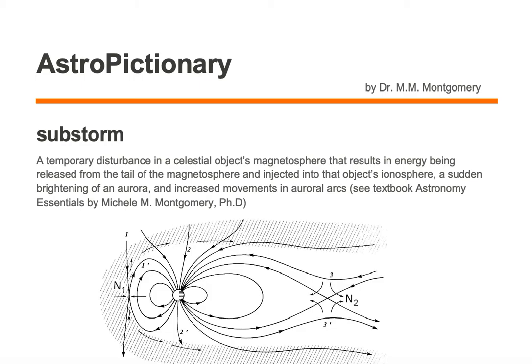A substorm is a temporary disturbance in a celestial object's magnetosphere that results in energy being released from the tail of the magnetosphere and injected into the object's ionosphere, a sudden brightening of an aurora, and increased movements in auroral arcs.